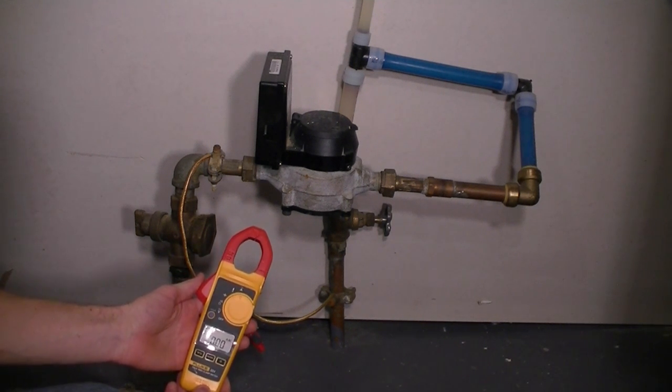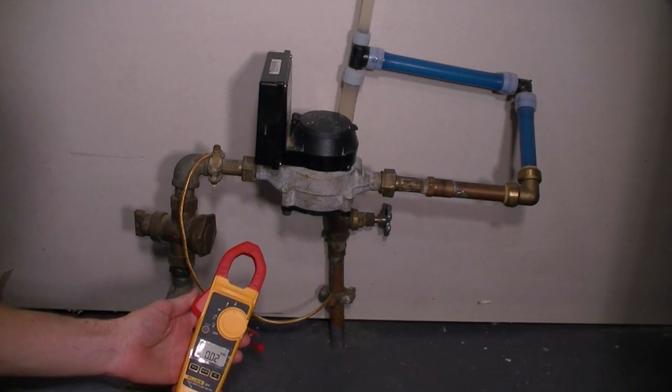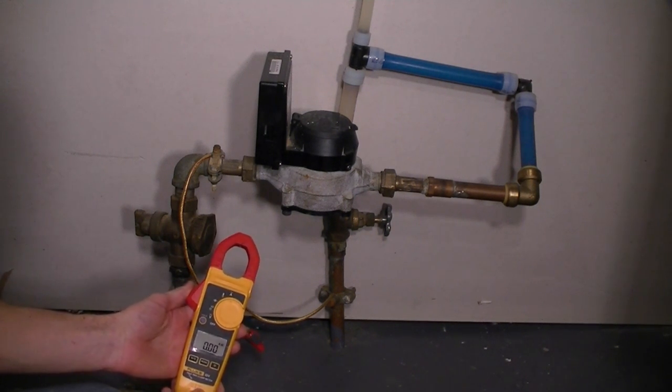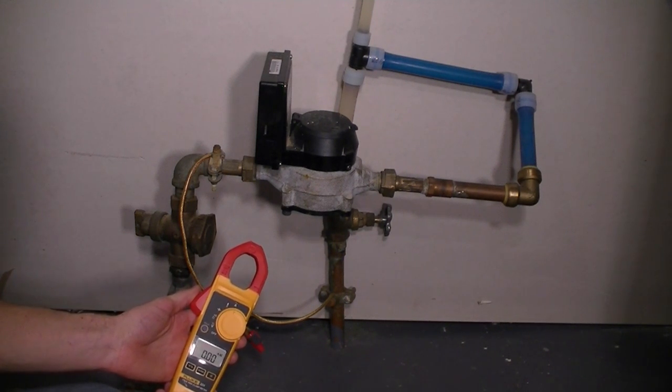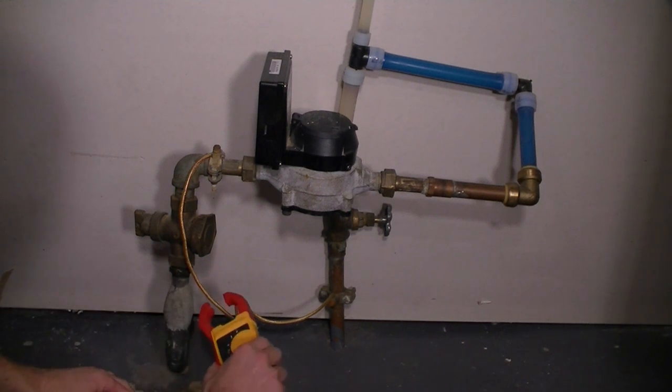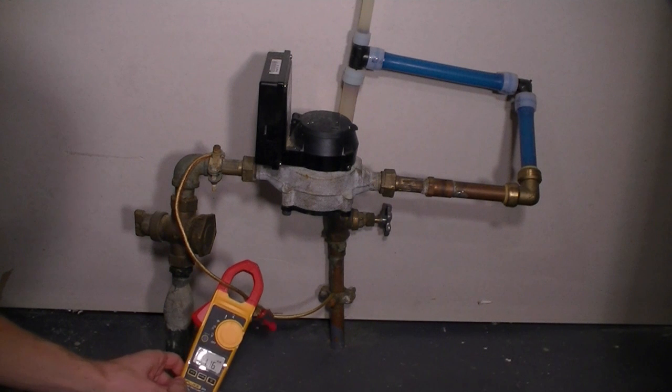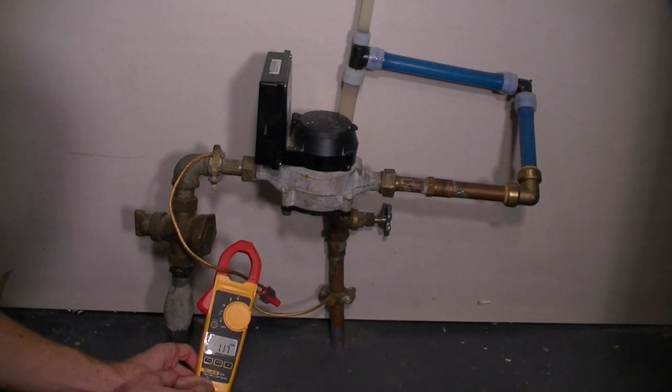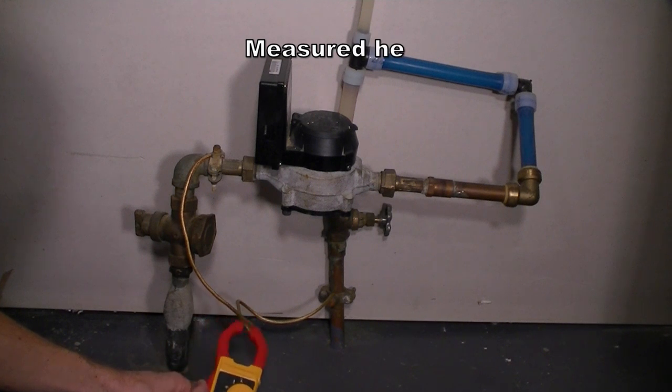This is a clamp meter or an amp meter. This measures current in amps. And what you do with that is you put it over one wire. Now, here we have a pipe and we have a wire. I'll put it over both and you'll see that the reading will be the same no matter where I put it. So first I'll clip it around this wire. And you can see we have a reading of 1.16 amps. That's quite a bit of current. That's a lot of current actually.